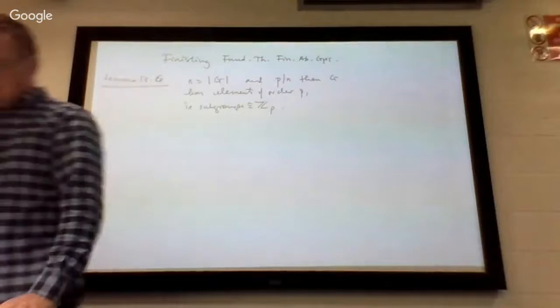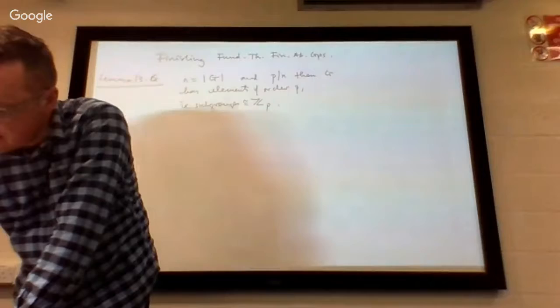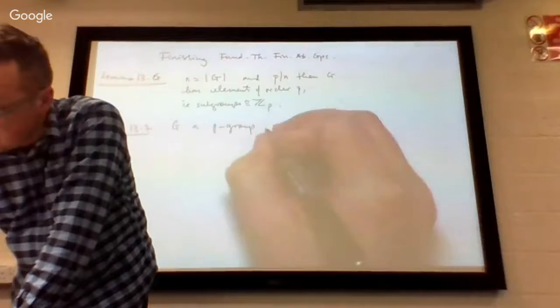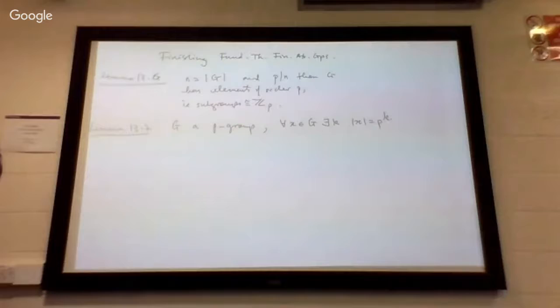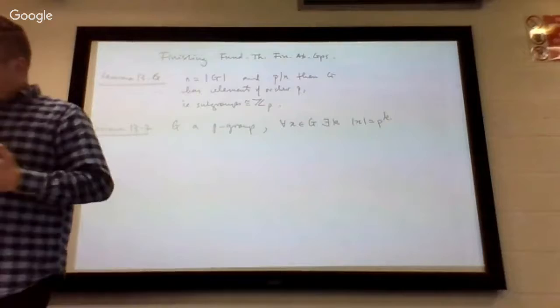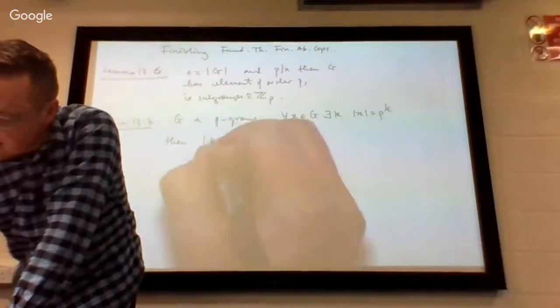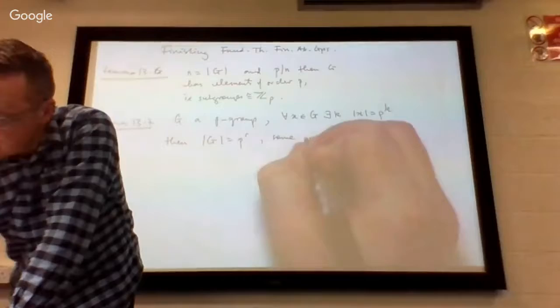And 13.7 says: G is a P-group. That means for every x in G, there exists k such that the order of x is P^k. A P-group is a group that consists of elements all of whom have order some power of P.